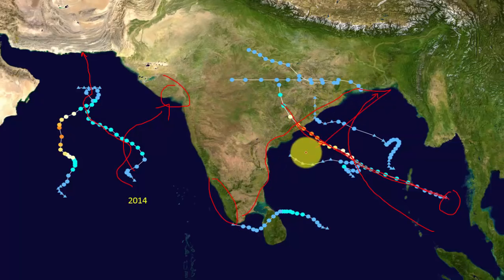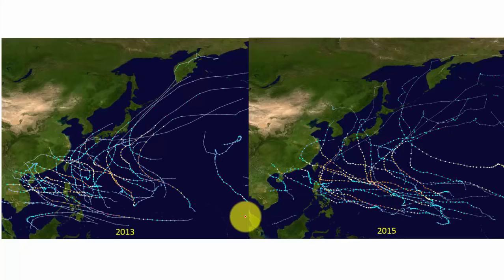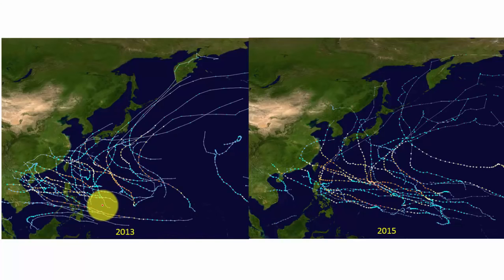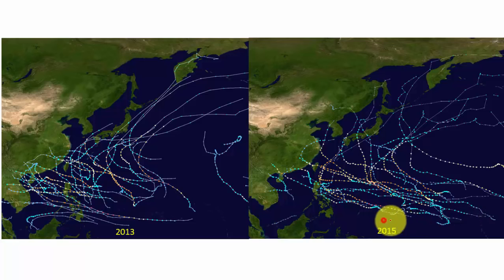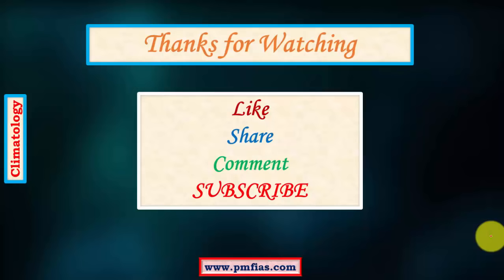In 2013, a non-El Niño year, typhoon formation was very close to the western Pacific, whereas in 2015, an El Niño year, significant typhoons formed in the central Pacific because of the warmer waters there. This breeding ground shifts east to the central Pacific during El Niño years. We will see this in detail while explaining about the effect of El Niño on the formation of cyclones. This is the introduction to tropical cyclones.